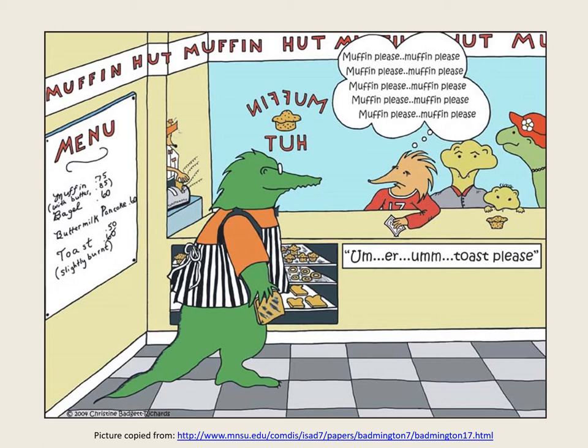If you feel strongly motivated to say a word very well without making any speech errors, the threshold mechanism will only allow the speech plan for that word to be released for motor execution after it has become highly electrically activated. If on the other hand we don't really care how clearly and accurately we speak a word, the release threshold for the speech plan for that word will be set at a lower level.